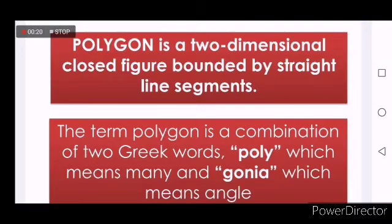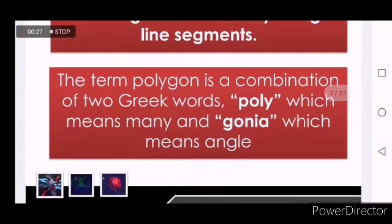The word polygon came from two Greek words, poly and gonia, which literally means many angle.